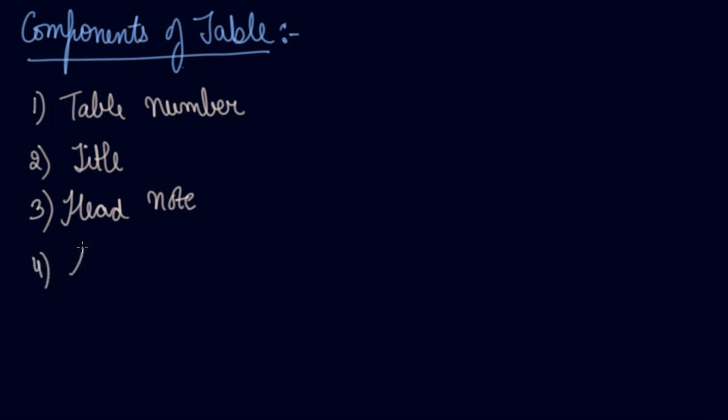Fourth comes the stubs. What are the stubs? These are the title of the rows. Like what rows depicts you, what rows shows you. These titles indicate information contained in the rows of the table.